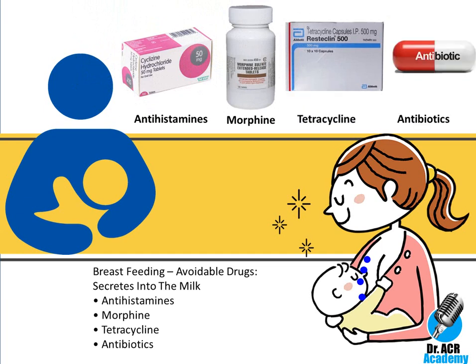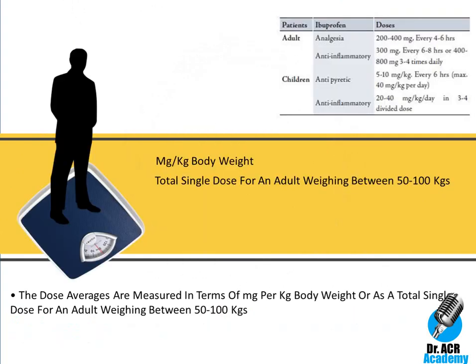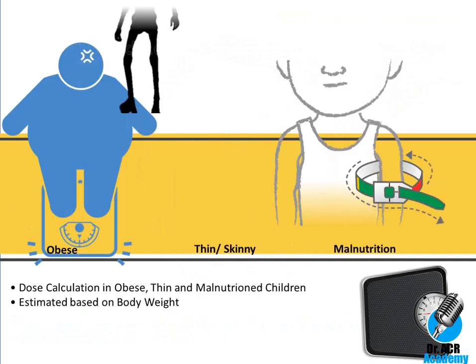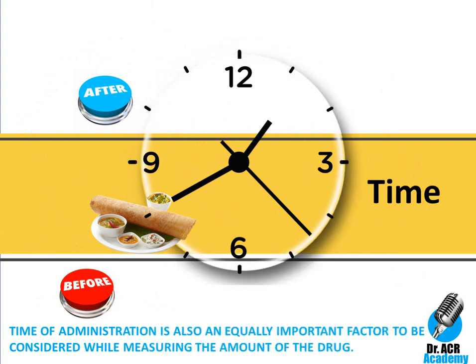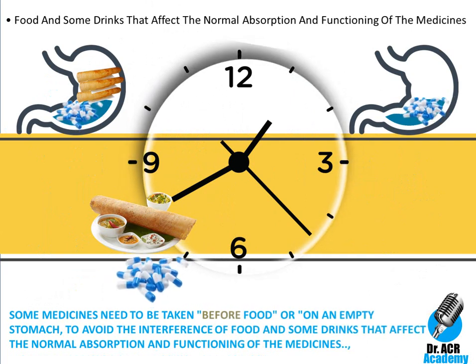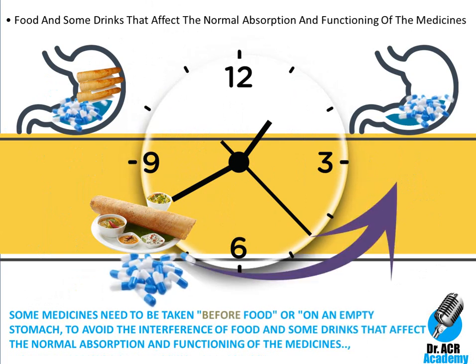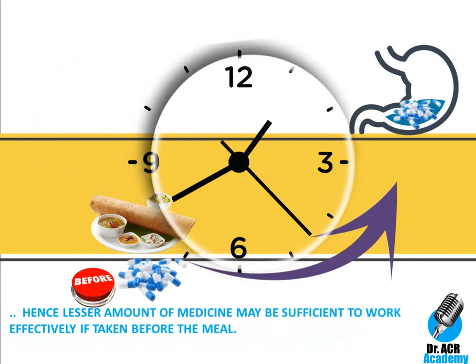Body weight is another key factor that defines the average dose to be given. Usually the dose is measured in terms of mg per kg body weight, or as a total single dose for an adult weighing between 50 to 100 kg. However, this is not applicable in obese persons, thin children and malnourished patients where it is calculated based on body weight. Some medicines need to be taken before food or on an empty stomach to avoid interference with normal absorption and functioning.